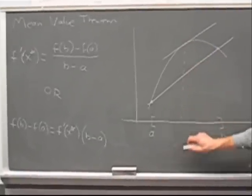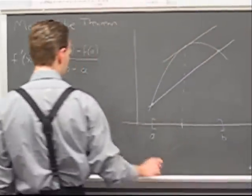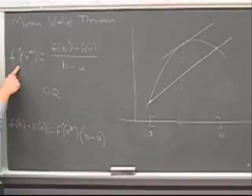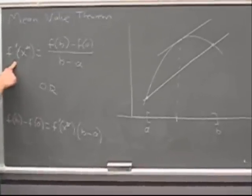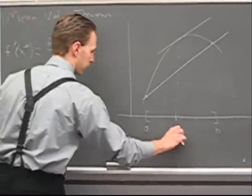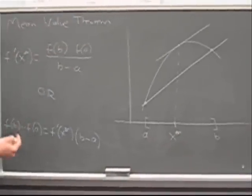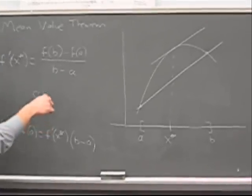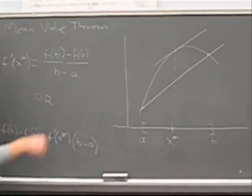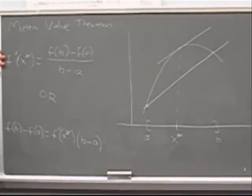which says that there's got to be at least one value of x here inside the interval ab, not including a and b. I call it x star. Such that the derivative of the function at that point equals the slope of the line that joins the endpoints. So this is how it's stated.